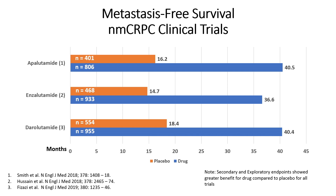Here are the results of the three trials. Shown on the gold or brown bars is the placebo arm, and the blue bars are the drug treatment arm. All of these trials were done as a two-to-one randomization, which is often done when you expect the intervention to have significant benefit. If you look at the difference in metastasis-free survival, each of these trials showed about a 22 to 24 month difference in favor of the medication, and the FDA believed that almost two years was a significant difference to approve them.